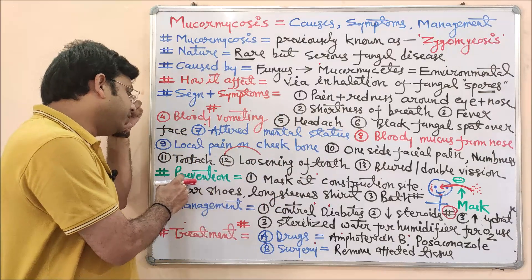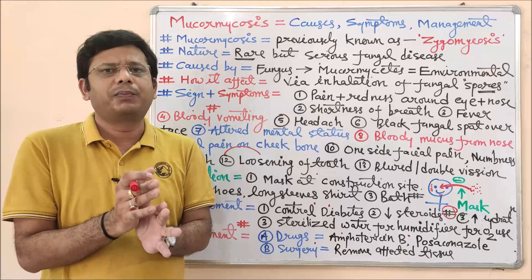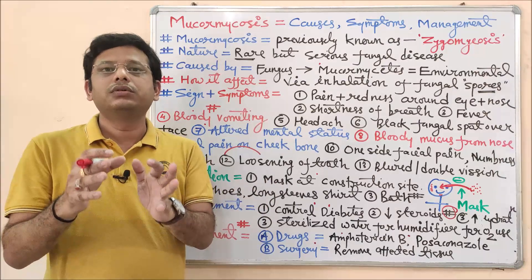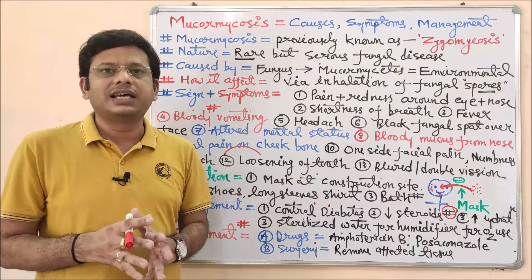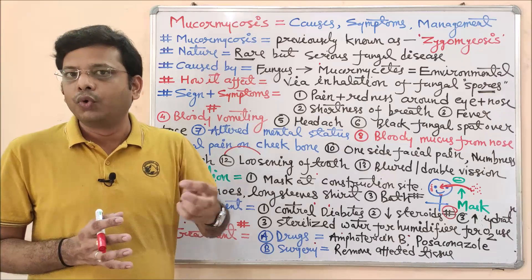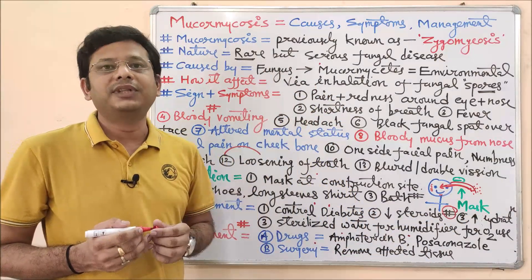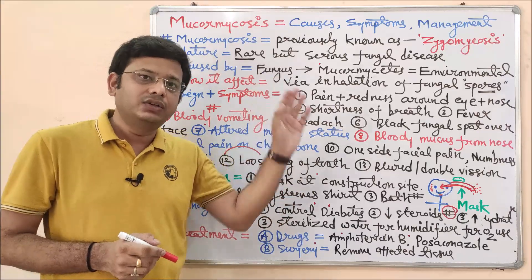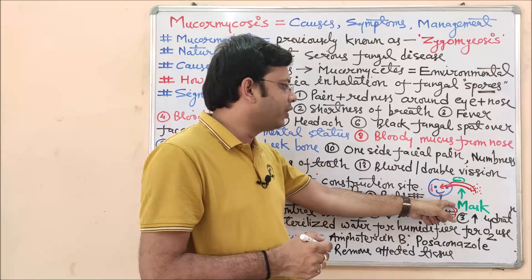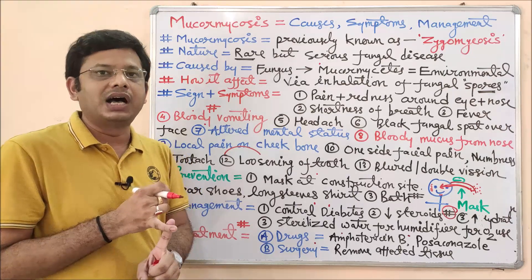Prevention refers to steps taken before a person gets affected by a disease. For mucormycosis, the first prevention measure is wearing a mask. If you visit any construction site, there are chances of mold-causing agents being suspended in dust. After recovery from COVID-19, you must wear a proper three-layer surgical mask along with a cotton mask to prevent inhalation of the causative agent.